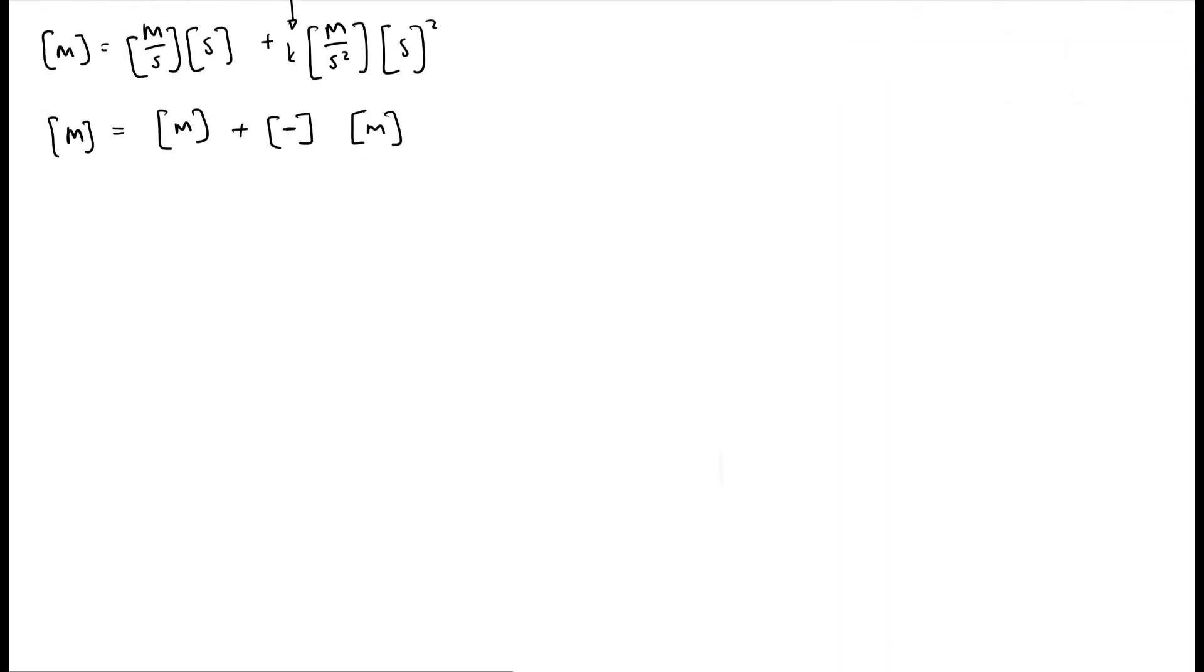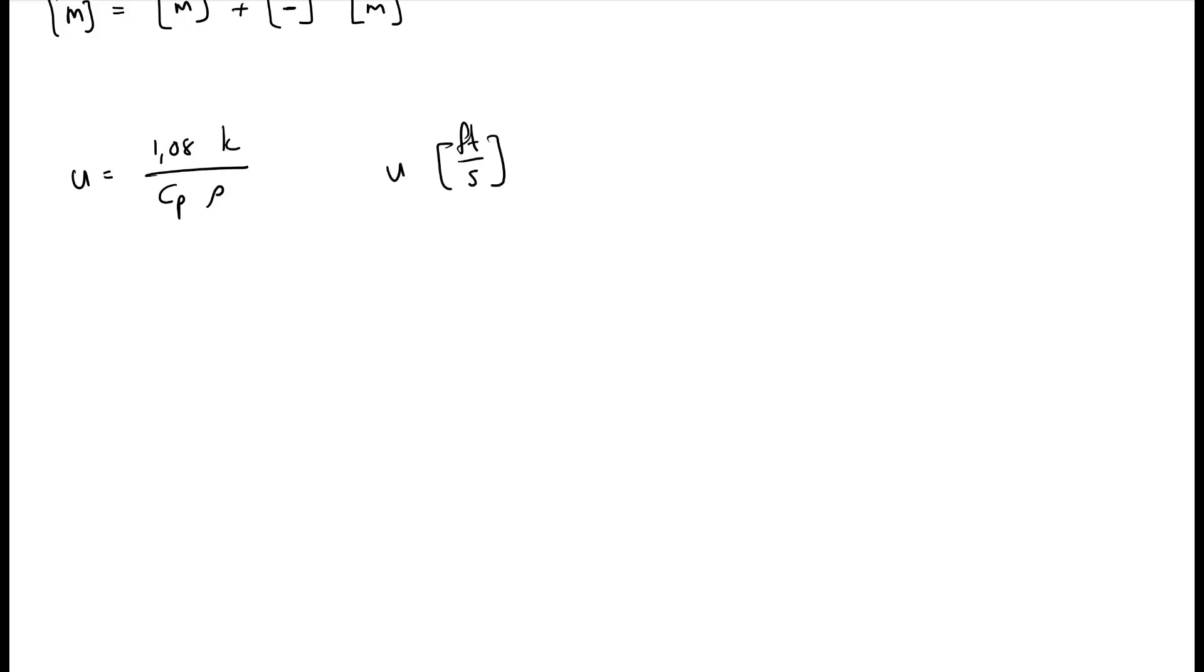Let's now look at two examples. The first example, I'm going to continue from my previous slides, where I said that u equals 1.08 multiplied by k over cp rho. And I told you that u is in units of foot per second, k is in units of btu foot hours degrees Fahrenheit. And I said that cp is in units of btu over pound degrees Fahrenheit. And I said that rho is in units of pound per foot cubed.